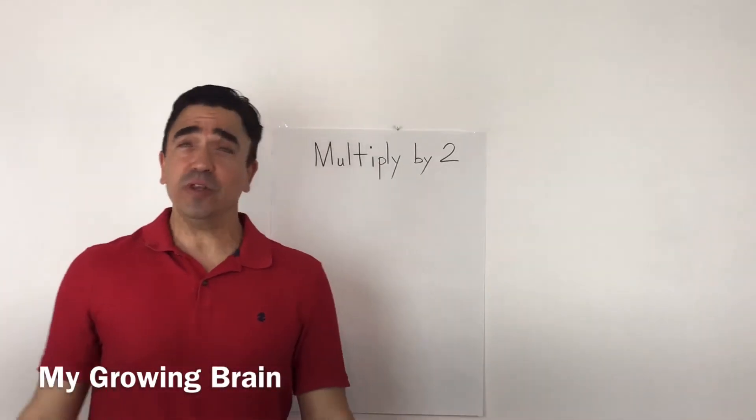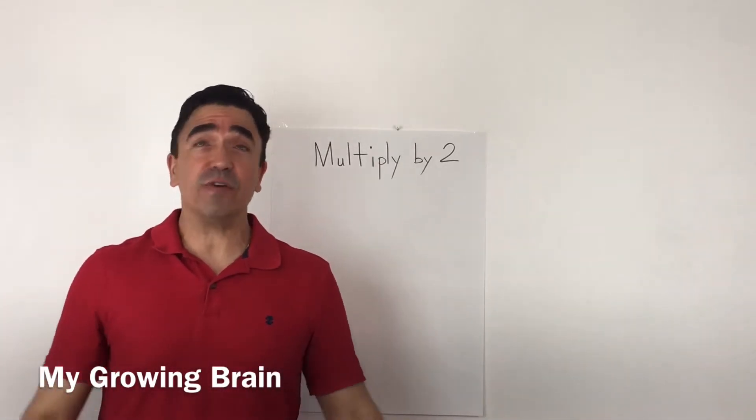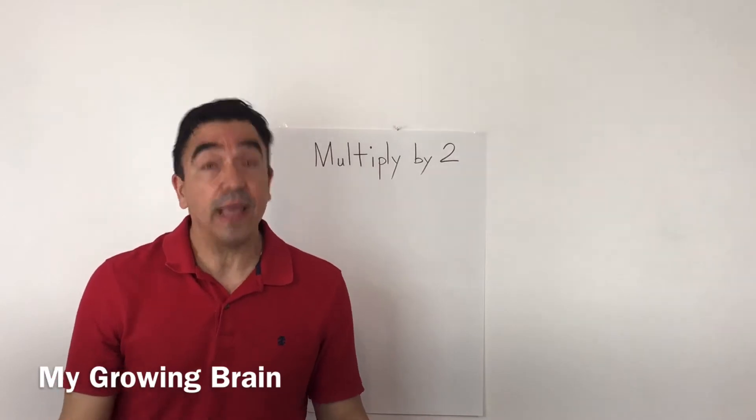Basically, when you multiply, you just double whatever number you're multiplying, except for 0.